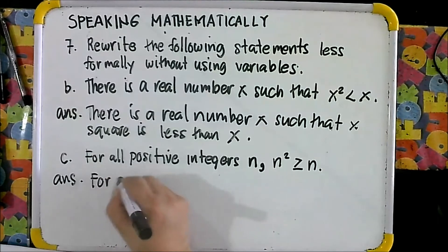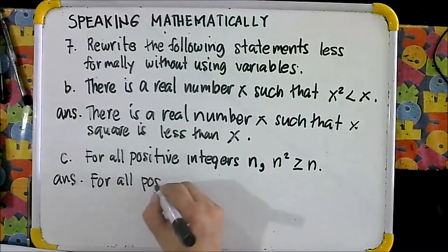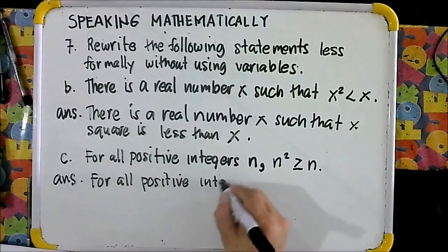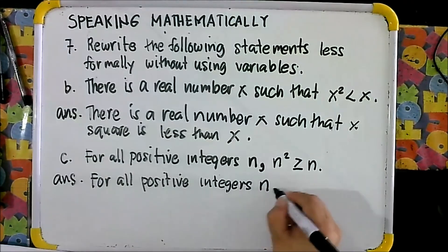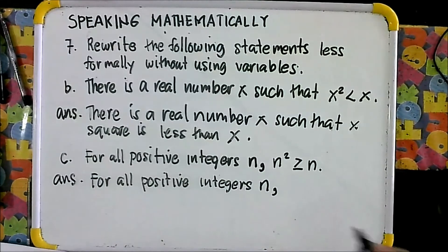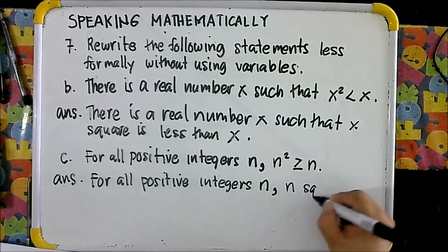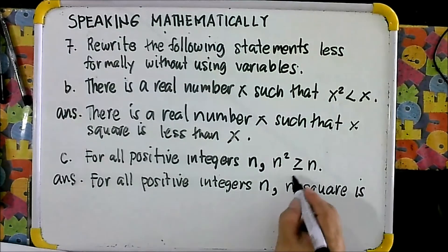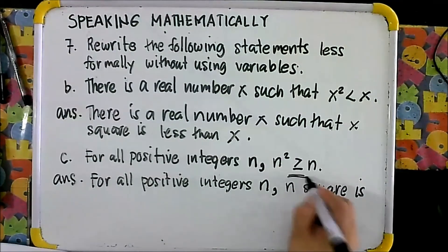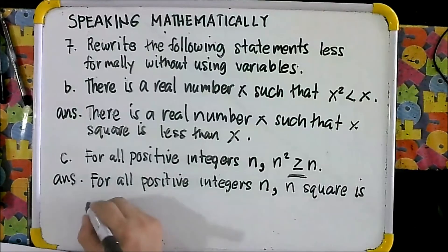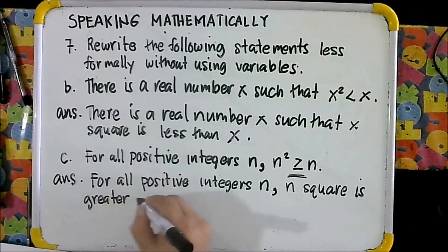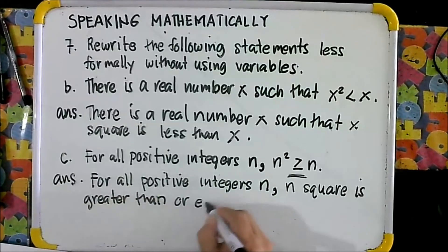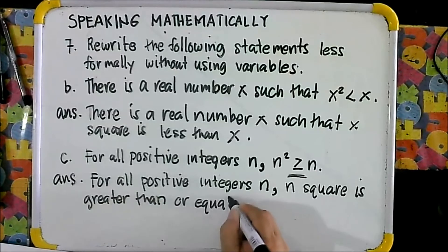For letter C: for all positive integers N, N squared is greater than or equal to N.